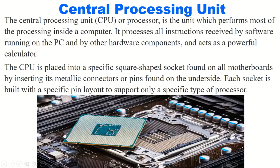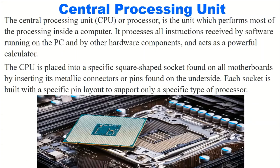The CPU is placed into a specific square-shaped socket found on all motherboards by inserting its metallic connectors or pins found on the underside. Each socket is built with a specific pin layout to support only a specific type of processor. Microprocessors are designed for a specific motherboard so they can easily fit into that socket, as seen in the picture, with their pins attaching to the socket.